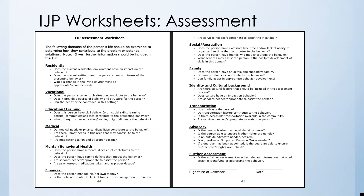This is an example of an IJP worksheet used to conduct the assessment. Each heading includes probing questions to get the team thinking about how to gather the necessary information. By answering the questions, you will be able to develop information helpful when writing the IJP. All documents shown today are available on P&A's website at www.ndpanda.org — the forms are fillable and available for your use.